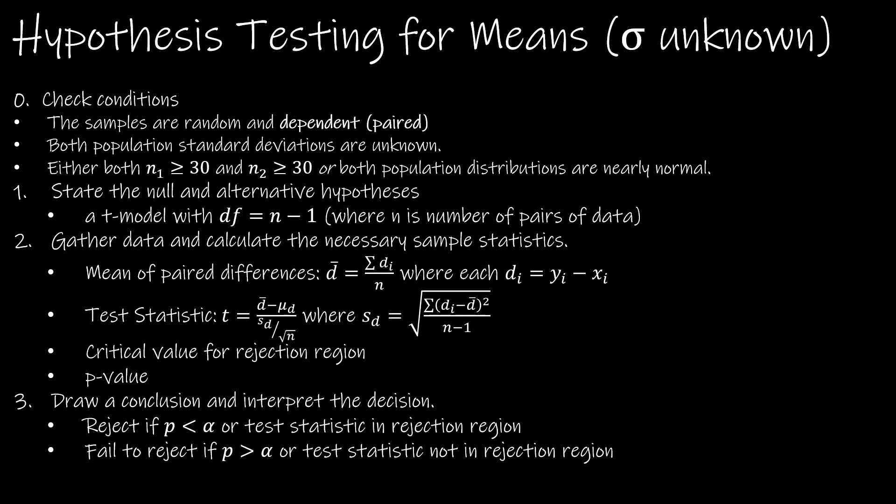Here's your summary page. We're going to check the conditions: the samples are random and dependent or paired, we don't know either population standard deviation, and either both n1 and n2 are greater than or equal to 30, or both are nearly normal. This is a T model, and the degrees of freedom is just n minus 1, where n represents the number of pairs of data.